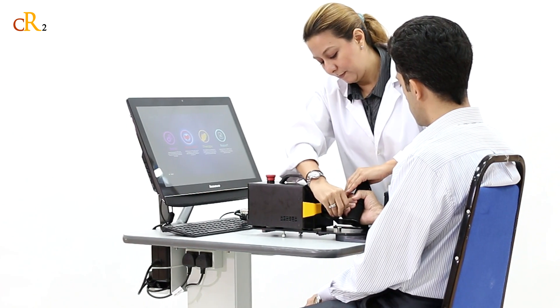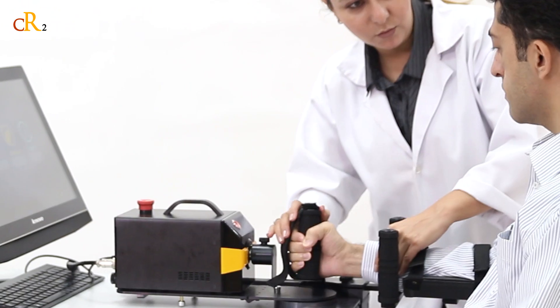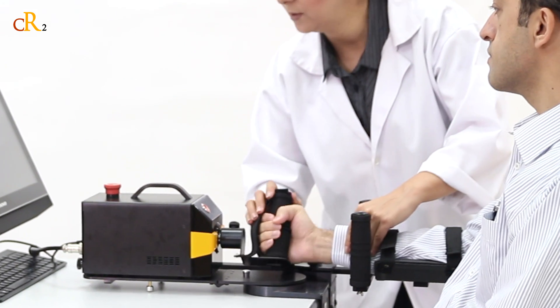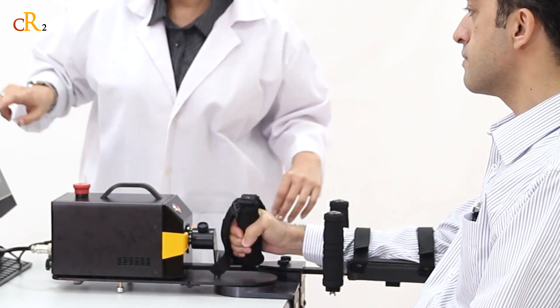CR2 Haptic is a compact and portable rehabilitation robot which provides exercise training for forearm and wrist movement.